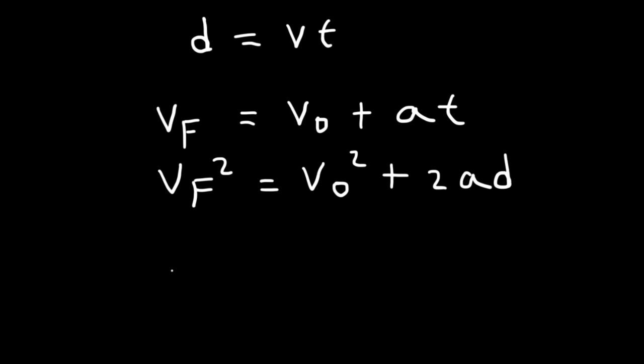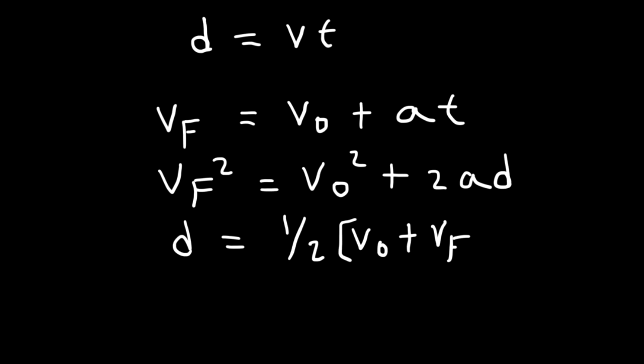Displacement is equal to the average speed — which is the sum of the initial speed and the final speed divided by two — multiplied by the time. As you can see, this third equation looks like the first equation for constant speed.